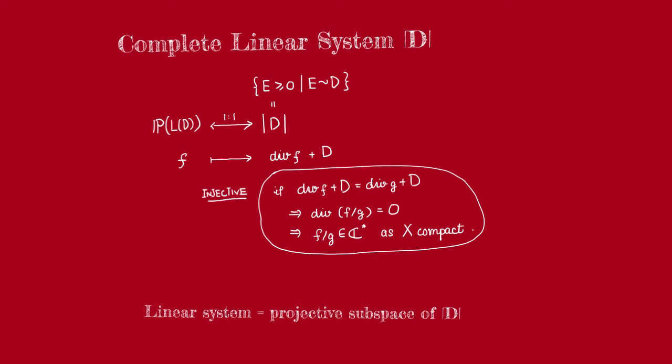A complete linear system associated to a divisor D is just a set of effective divisors linearly equivalent to D.